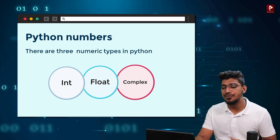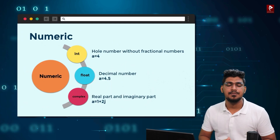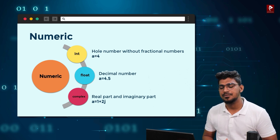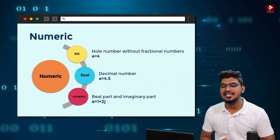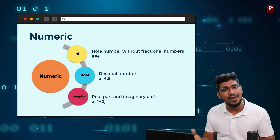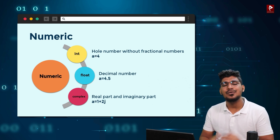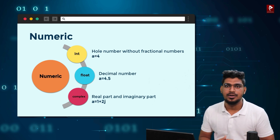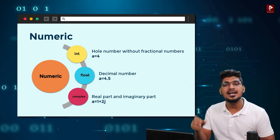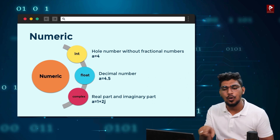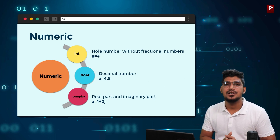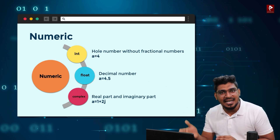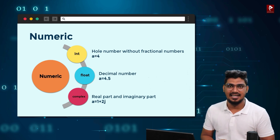What is the meaning of integer? Integer number is a whole number — without any decimal numbers or fractional numbers. For example, A is equal to 4. Here, it is a whole number. 4 is a whole number. A is a variable and 4 is a number. That is one of the data types — integer data type.